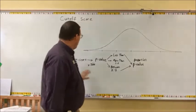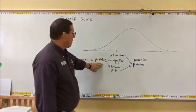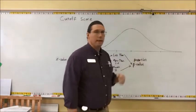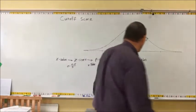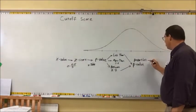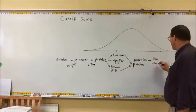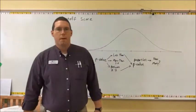Sometimes we then multiplied that proportion by a population to answer the question 'how many in the population meet this criteria?' Today, we're going to start with a proportion — really a percentage — and work backwards to find the cut-off score.